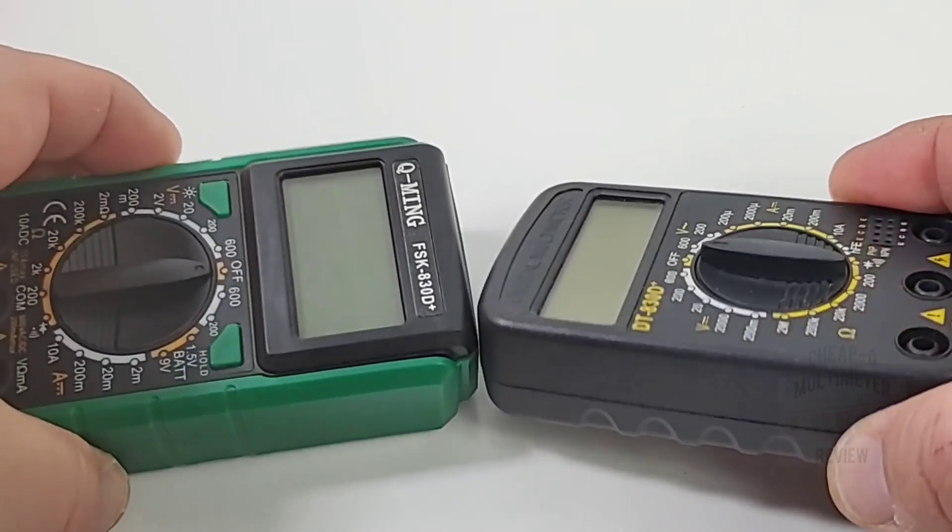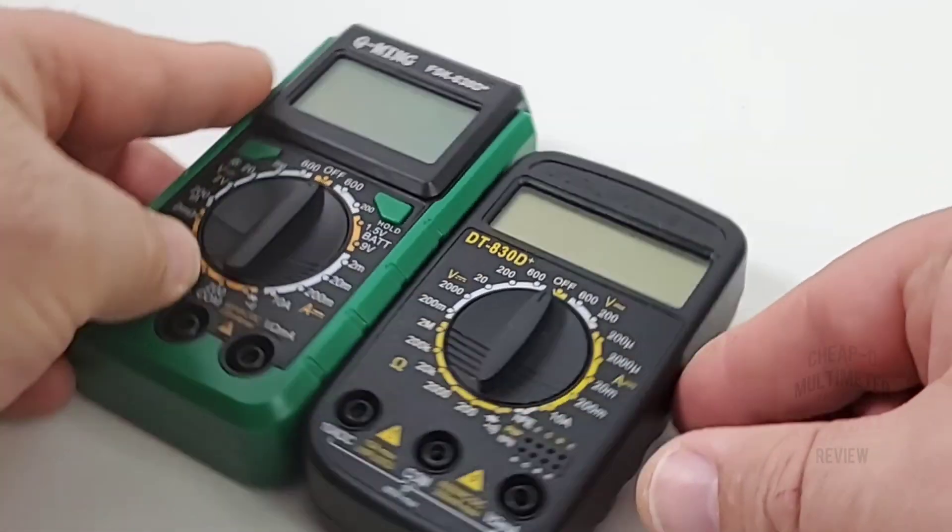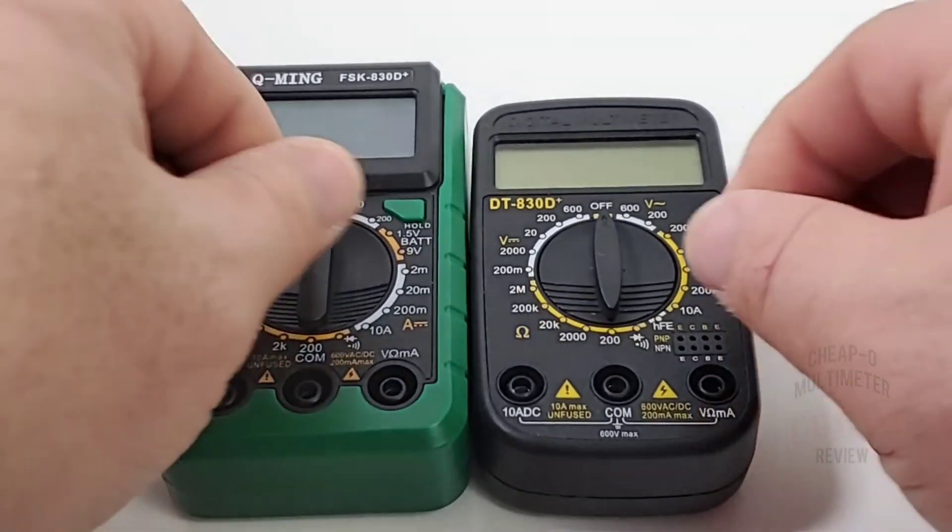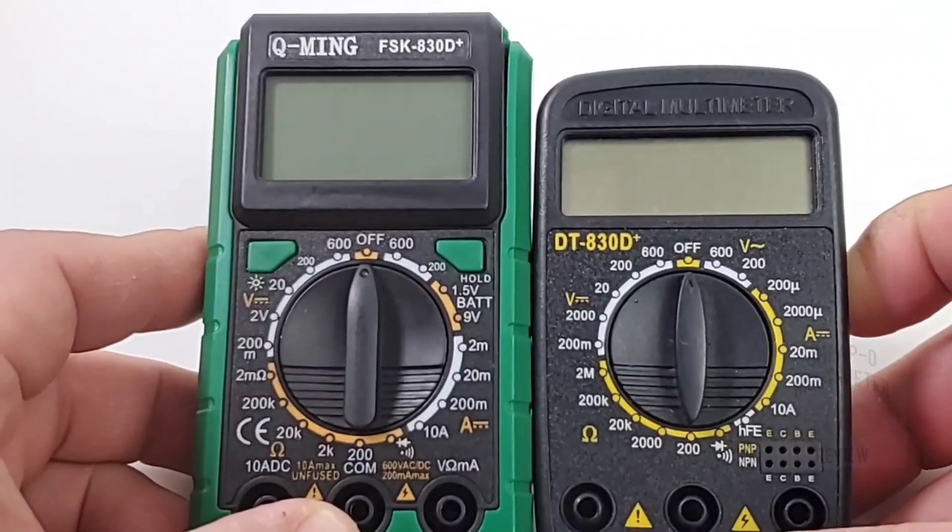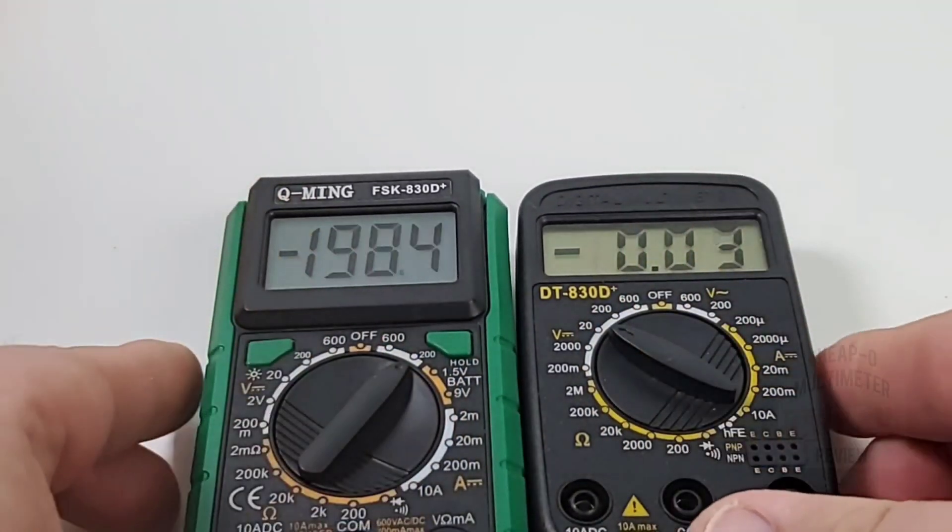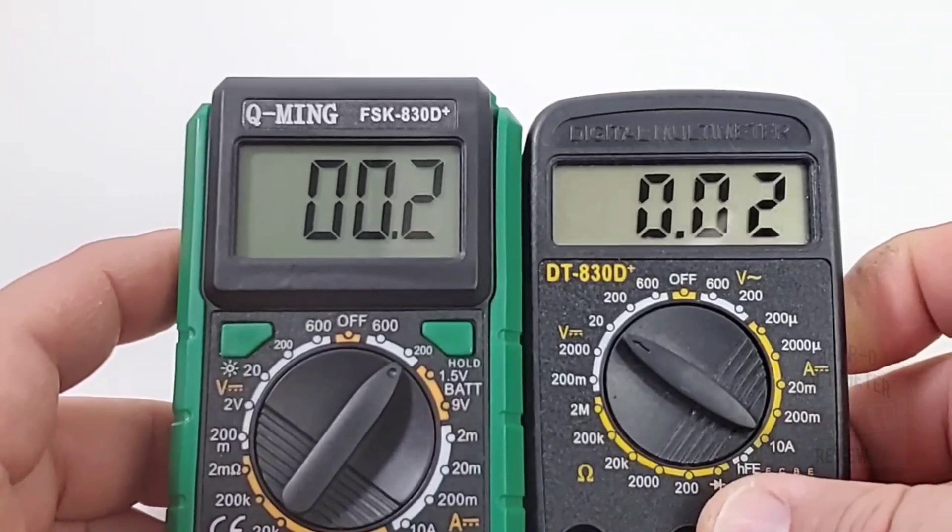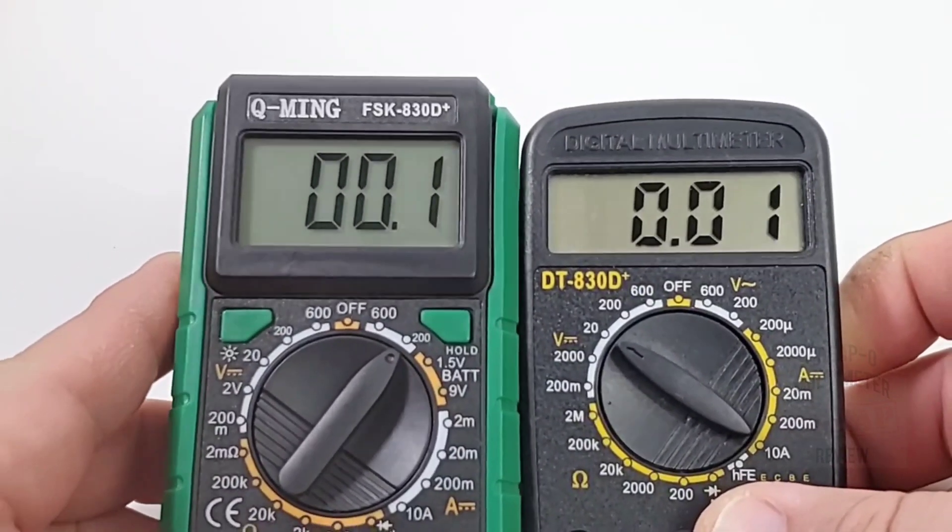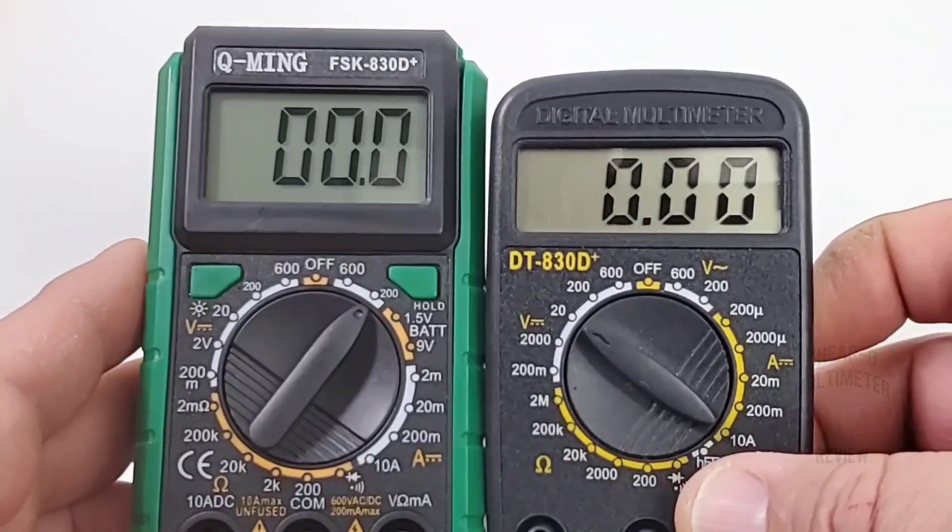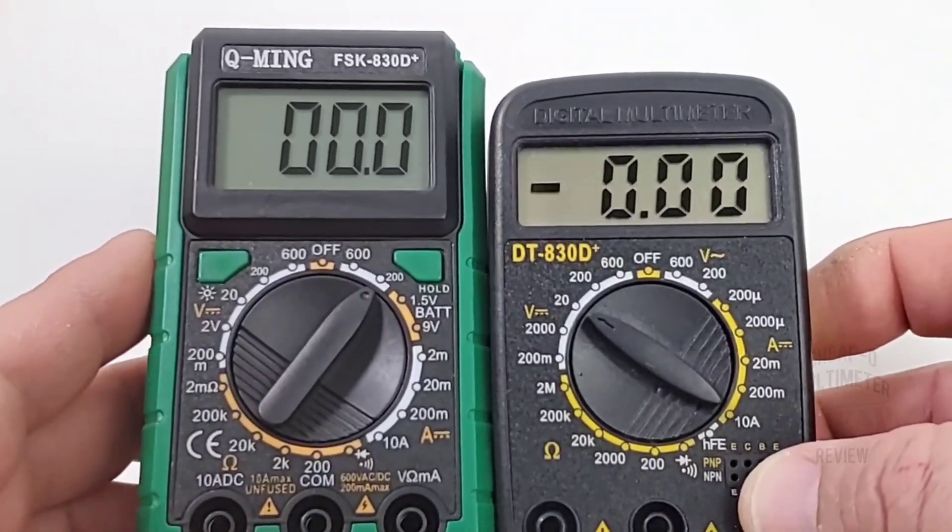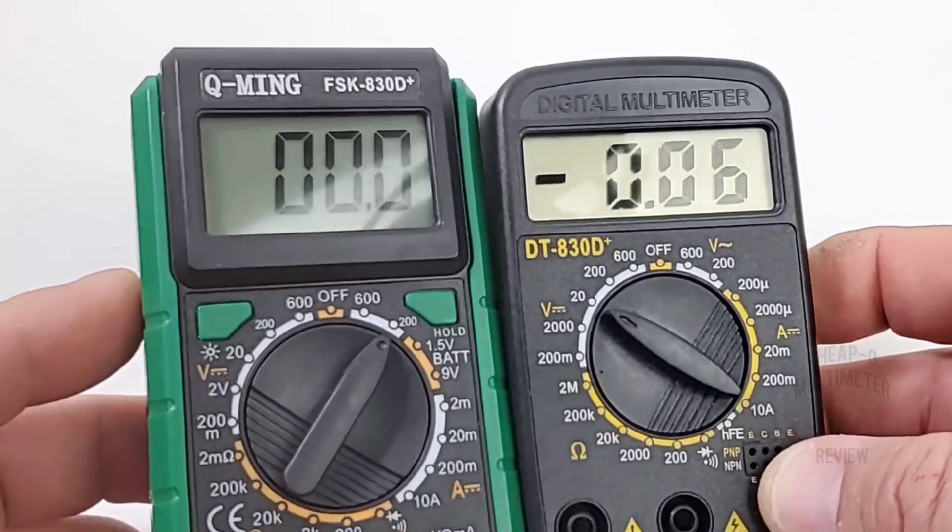Two 830D clones here. A little bit more heft with the Q-Ming. Both have that same selector switch, definitely a little bit bigger on the Q-Ming. But what I do like, if we take a look at the display, a bit bigger, a little easier on the eyes, the Q-Ming, nice contrast.